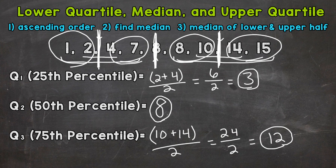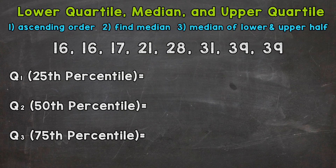Now that we know how to find the lower quartile, median, and upper quartile of a data set with an odd number of numbers, let's look at a data set with an even number of numbers. We need to start by ordering our data from least to greatest. In this example, we are already in order, but make sure you start with ordering any numbers that are out of order. We have eight numbers in this data set, so we'll have four on the left and four on the right. The middle is going to be in between the 21 and the 28.